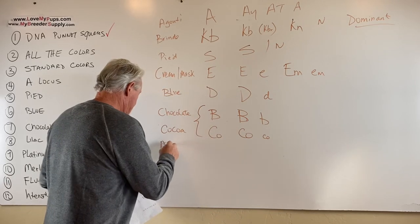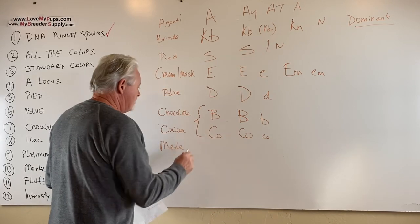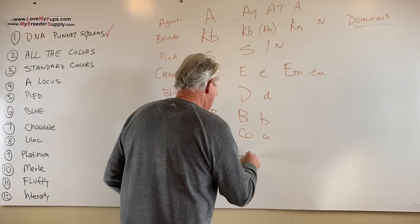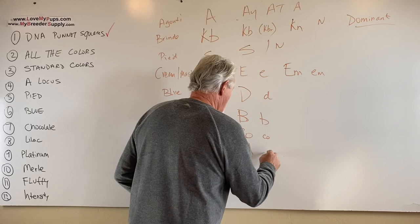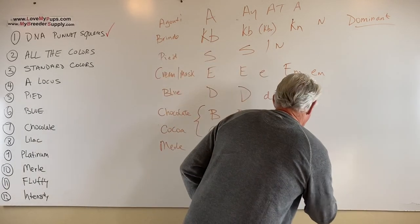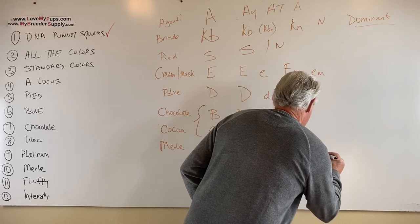Okay. Merle. This is another of those dominant genes. And the Merle gene is M. And either you have it, or you don't have it. And it only takes one copy for it to show up. This is dominant again. It's the dominant gene.